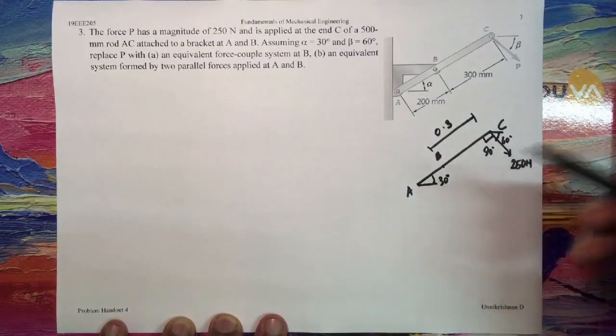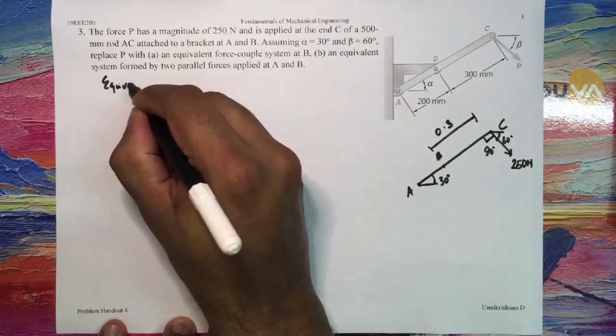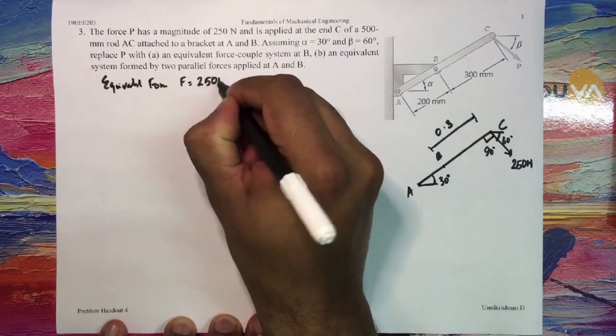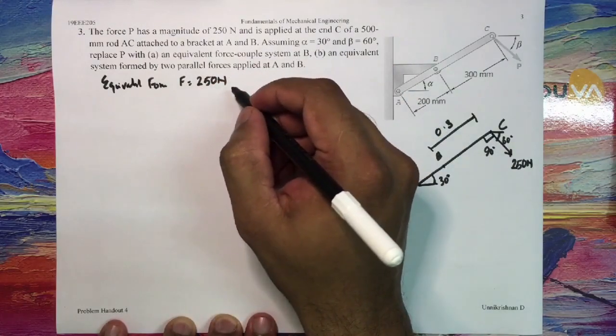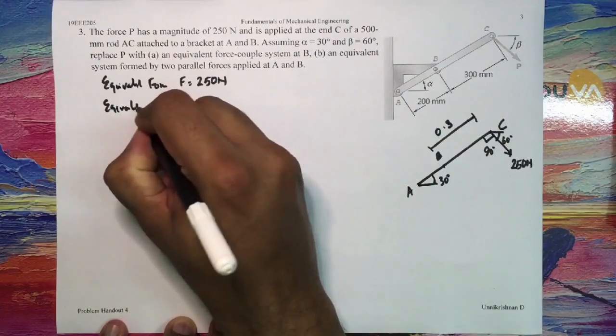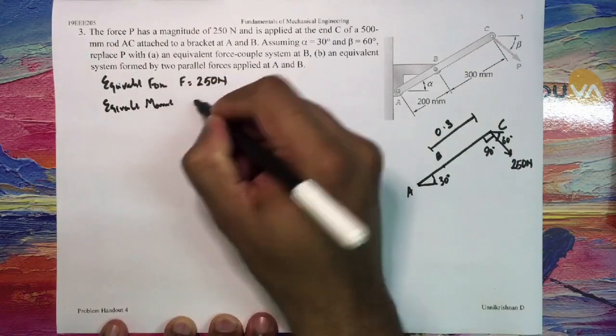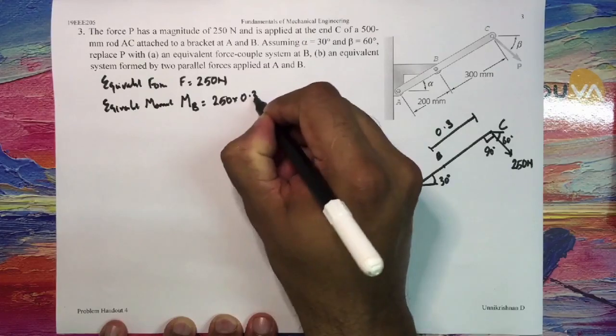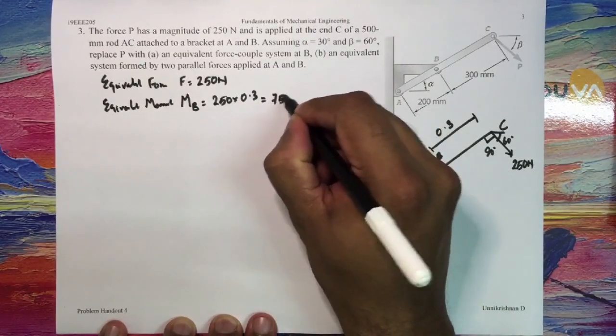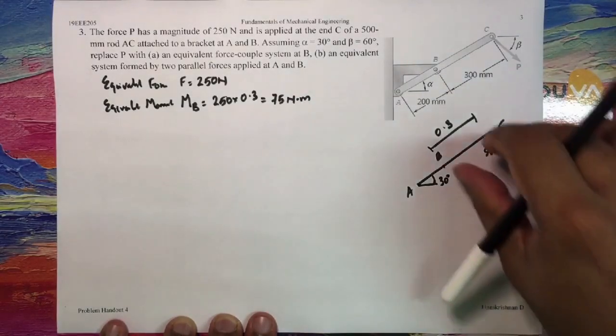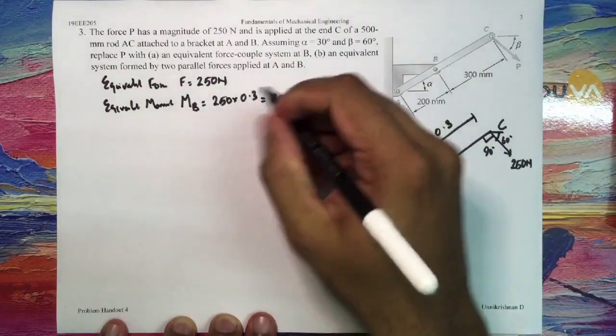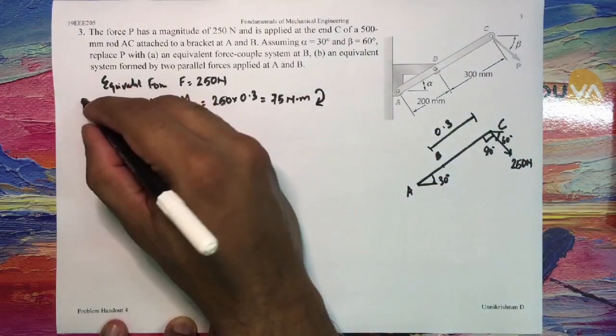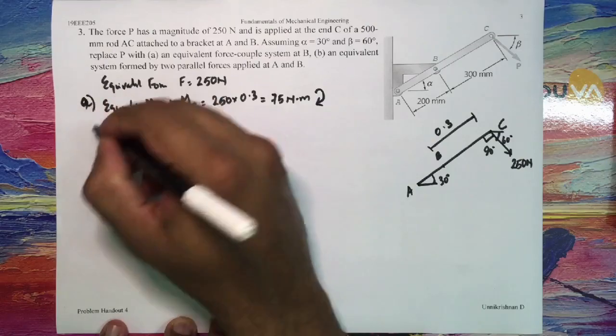So my equivalent force would be F is equal to 250 Newtons, and my equivalent moment would be M about point B, which is 250 into 0.3, which will give you 75 Newton meters. And if you see, this force is trying to rotate it in the clockwise direction, so I will put it with this arrow. So this is the equivalent force and the equivalent moment. So I have found out my part (a).